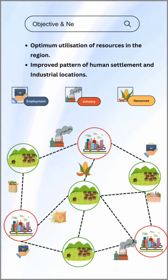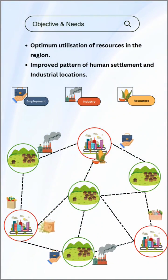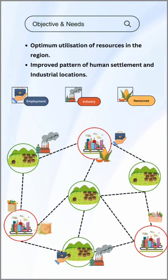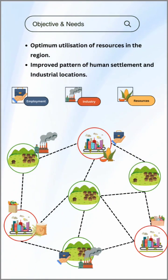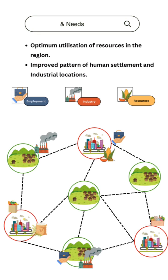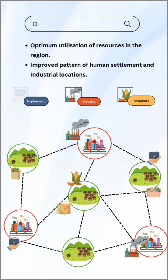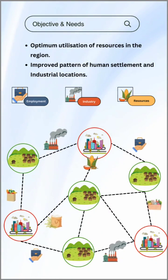Now that we understand the concept of regional planning, let's explore the objectives and needs of RP. The foremost objective is the optimum utilization of resources in the region. This includes improved patterns of human settlement, ensuring that people are distributed in a way that supports economic activities and enhances their quality of life.